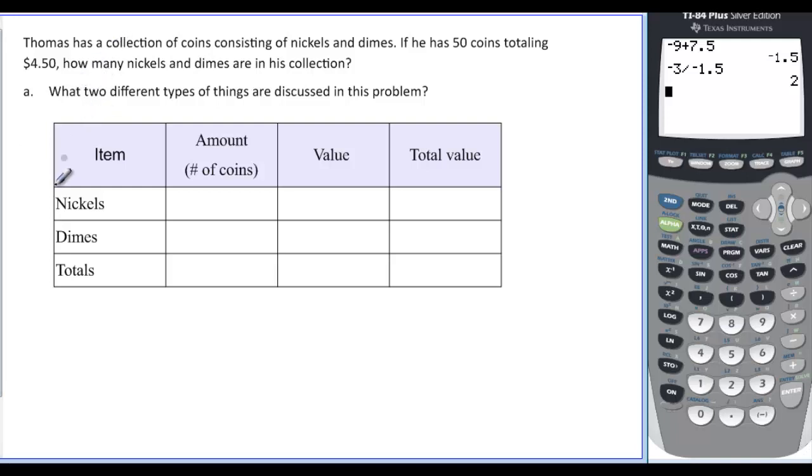Now we've got our money problem that we started with. Thomas has a collection of coins consisting of nickels and dimes. He has 50 coins total, and they total 450. How many nickels and dimes are in his collection? Well what are the two different things that we're trying to discuss in here? We're discussing nickels and dimes. So that's what our items are. We put our nickels and dimes under the item, because that's the two things they're talking about. And did they tell us how many of either one we have? The only thing they told us was that we had 50 coins. So that would be the total amount of coins.